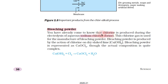Chlorine gas is used to manufacture bleaching powder. How to produce bleaching powder?